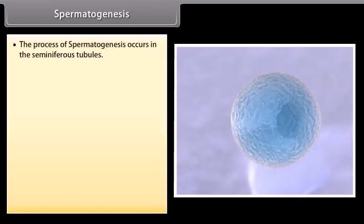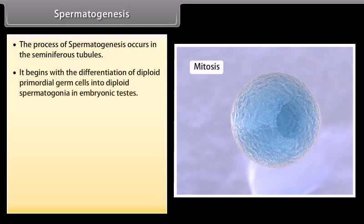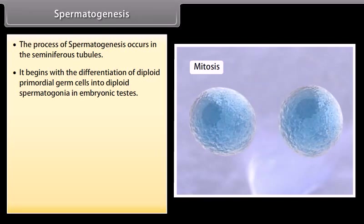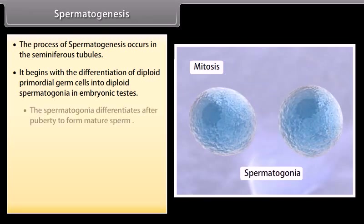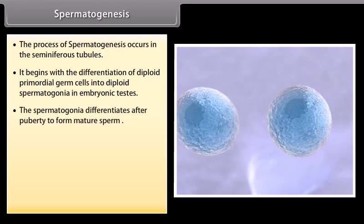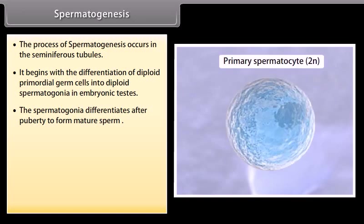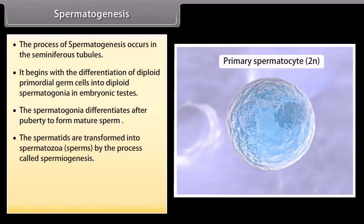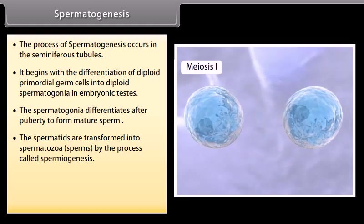Spermatogenesis is the process that occurs in the seminiferous tubules. It begins with the differentiation of diploid primordial germ cells into diploid spermatogonia in embryonic testes. The spermatogonia differentiates after puberty to form mature sperm as shown in the following diagram. The spermatids are transformed into spermatozoa or sperms by the process called spermiogenesis.